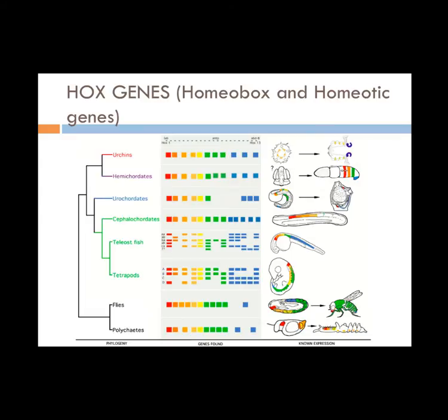Hox genes are special regulatory genes in all animals. They control gene expression in embryos. Hox genes are made of homeobox and homeotic genes. Homeobox is a 180-nucleotide sequence within a homeotic gene encoding the part of the protein that binds to the DNA of the gene regulated by the protein. Homeotic genes are master regulatory genes that control the body plans of animals by directing groups of cells.